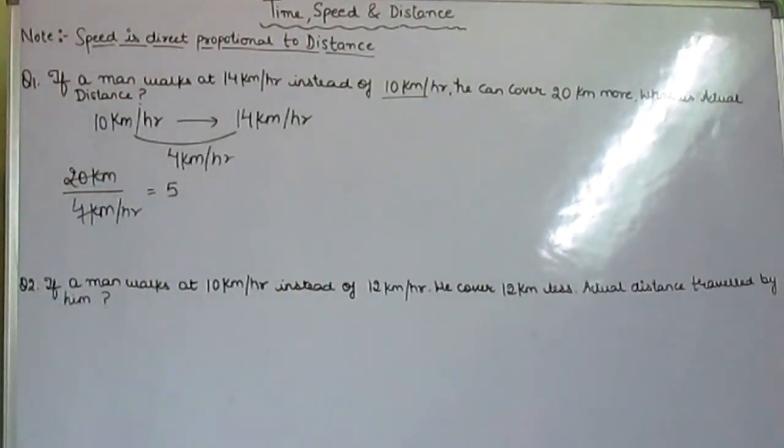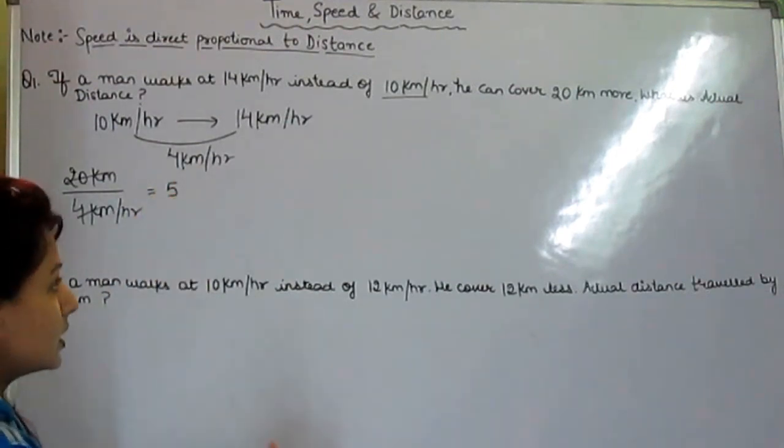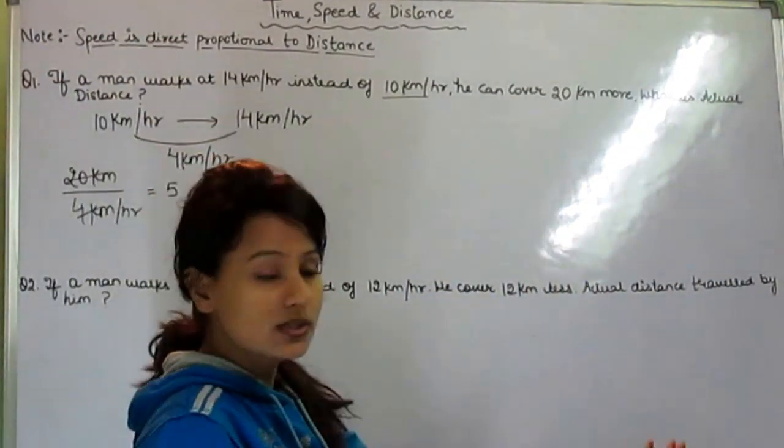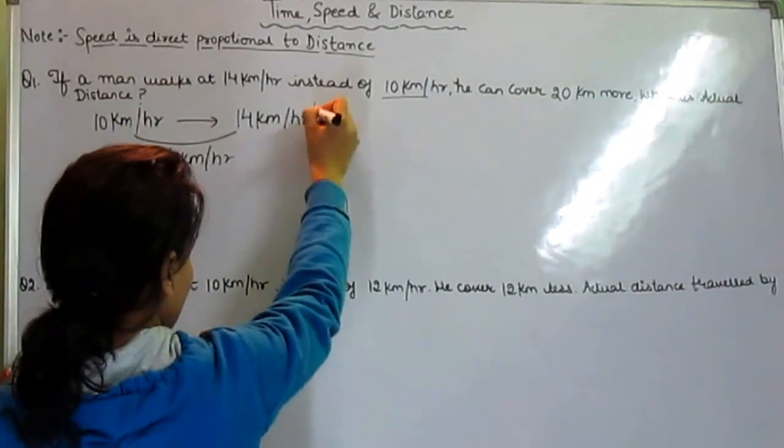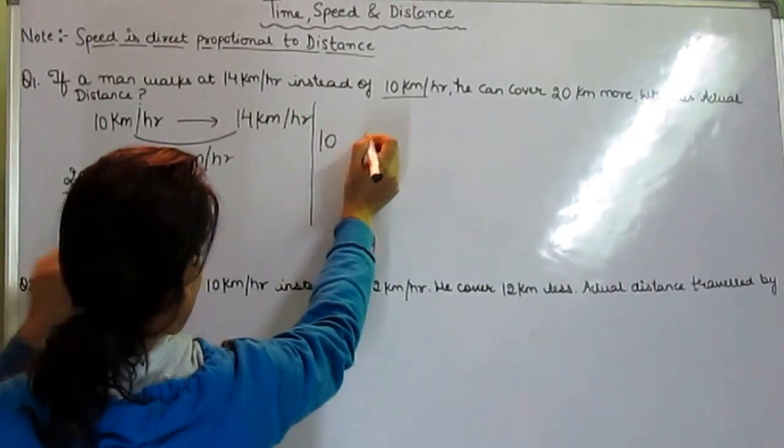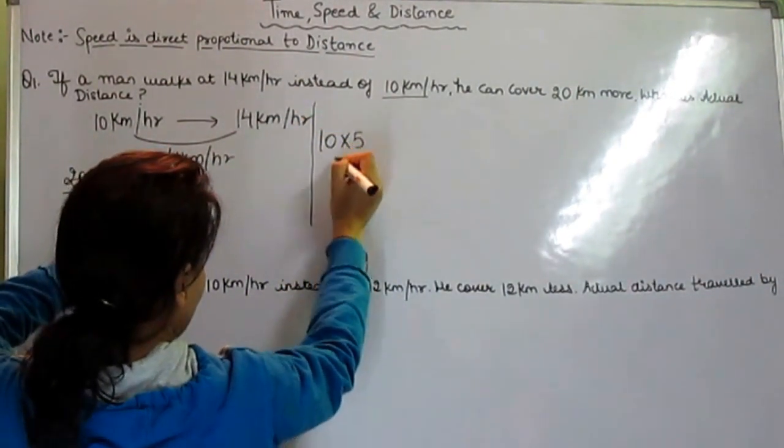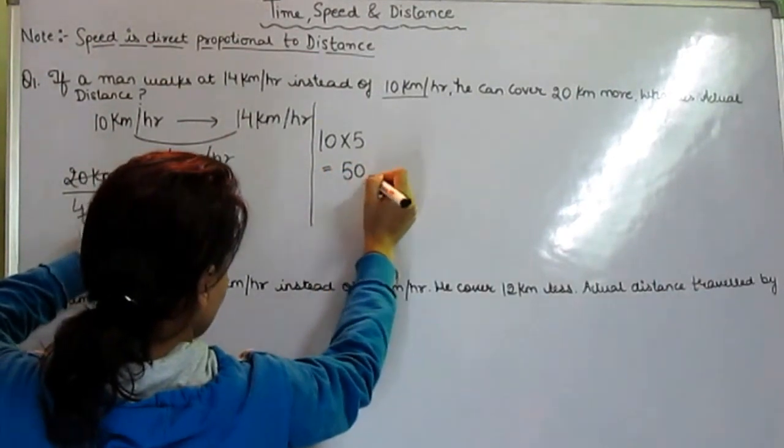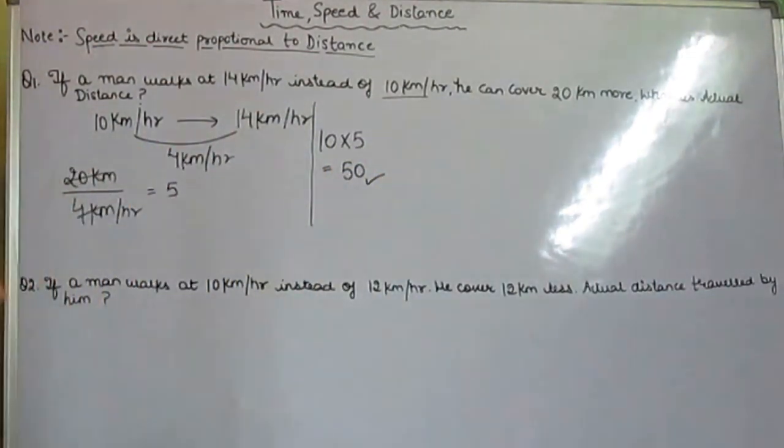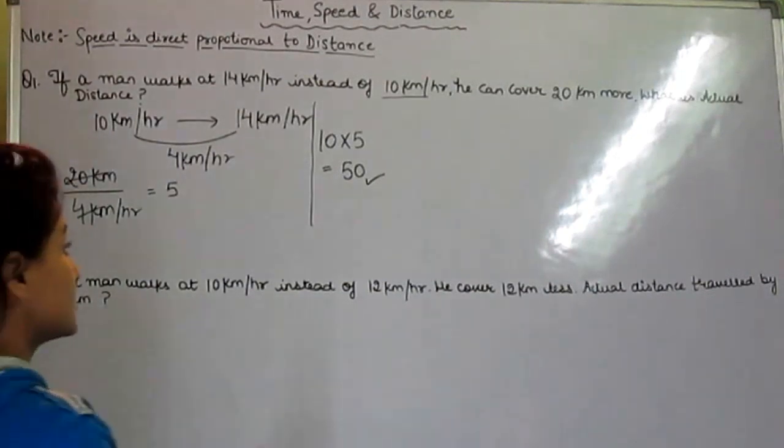We get 5. Now we are asked to get the actual distance. What is the actual speed? This is 10. We multiply this 10 by 5 and our answer is 50 km. This is the answer.